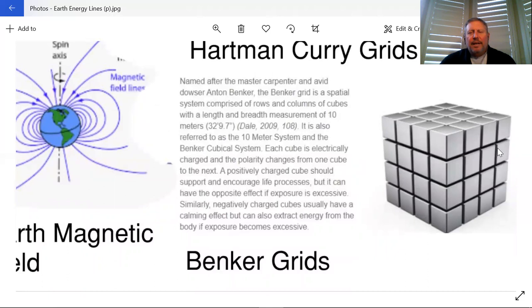Within the Benker grids, they're actually a horizontal grid that is layered. If this was the ground, this might be running through your head. They run about 10 meters. This one, you probably wouldn't get two Benker grids running through you, but you'd at least get one.